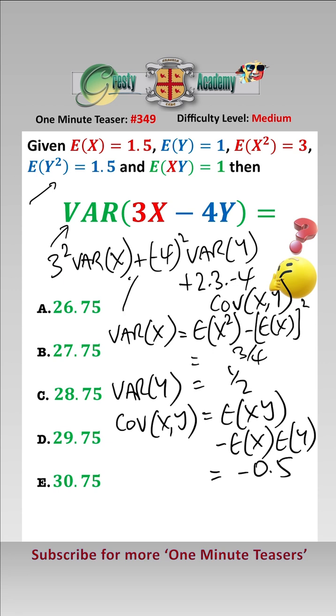So sticking all that into our formula here, we get that the answer is equal to 9 times 3 quarters, add 16 times a half minus 24 times minus a half, which equals 26.75, which is answer a.